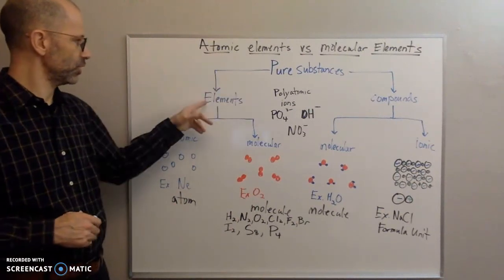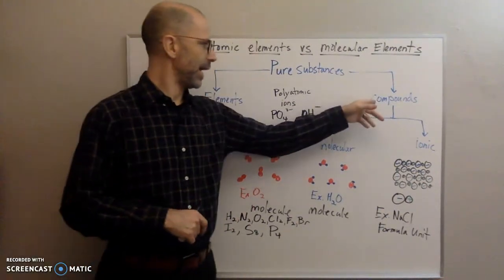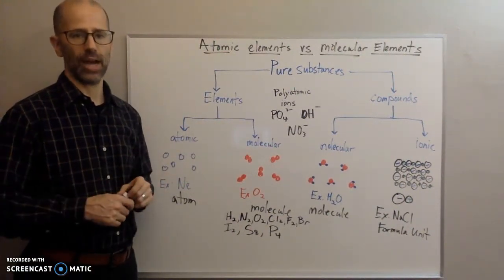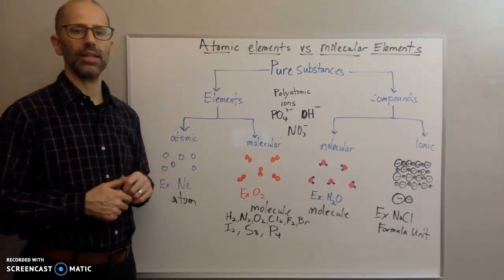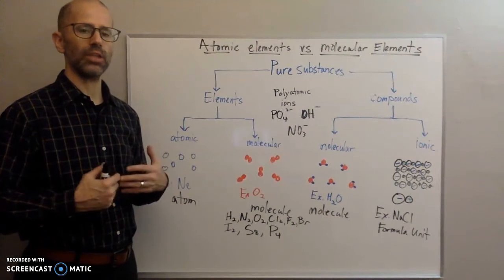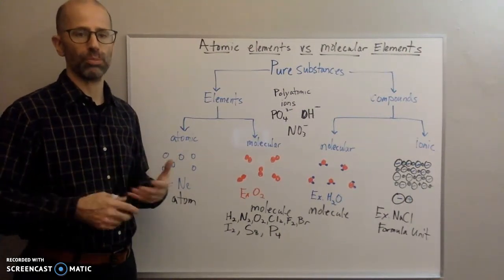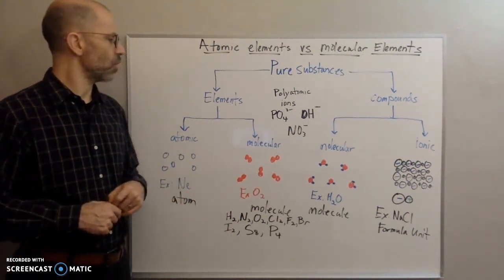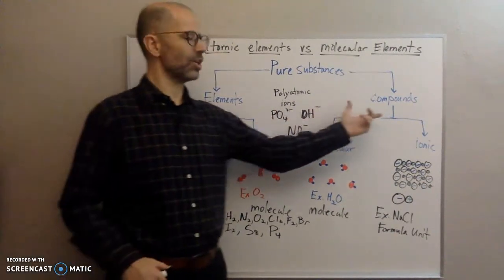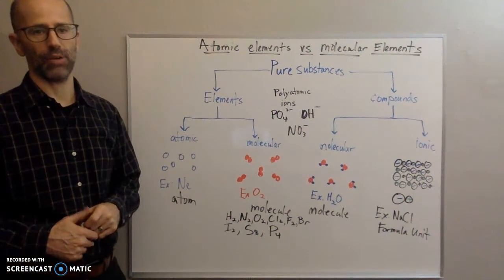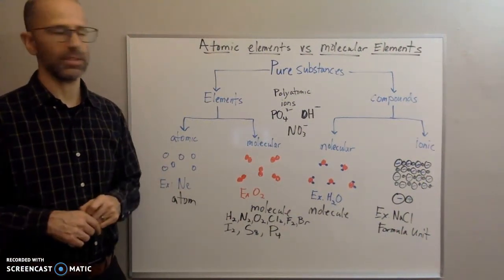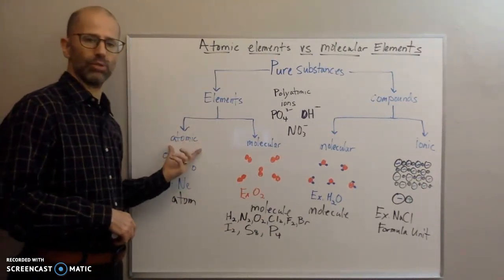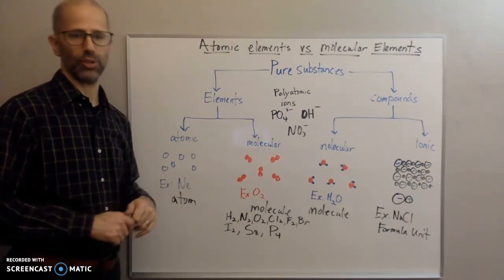Pure substances are once again divided into elements and compounds. An element is basically anything that's found on the periodic table, and elements are substances that cannot be broken down into simpler substances. You can't get anything different from them. Compounds are substances that can be broken down into simpler substances, and I'll go over examples of each. Elements are broken down into atomic elements and molecular elements.